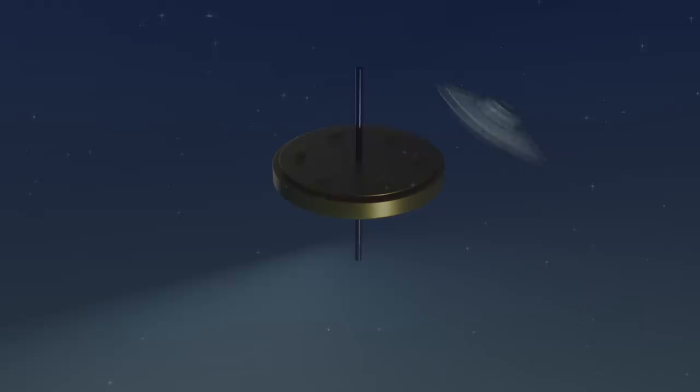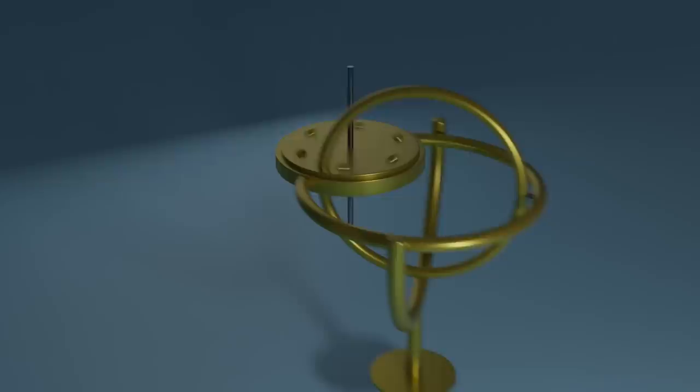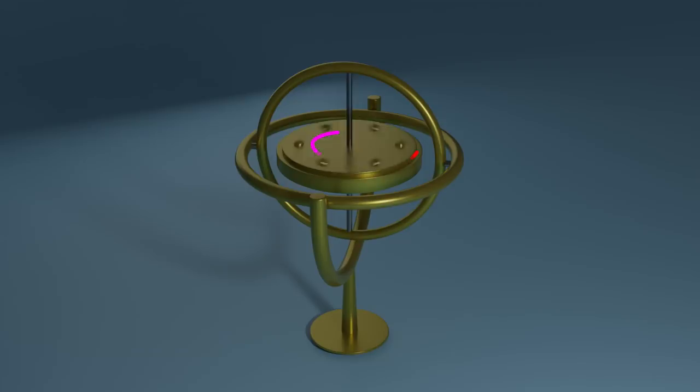A gyroscope is just a spinning disc mounted in a gimbal so that it's free to move. To start it spinning you apply a force to the disc making it rotate. You're building up its angular momentum. When something has angular momentum we also say there's a torque present acting along its spin axis so in this direction.